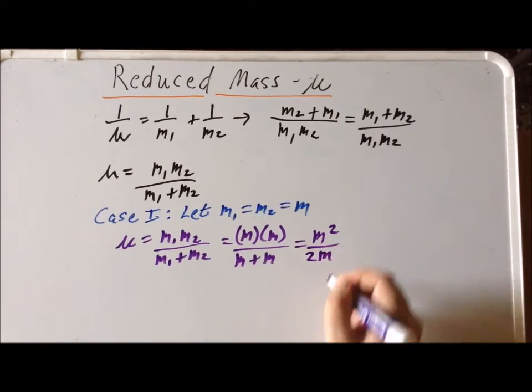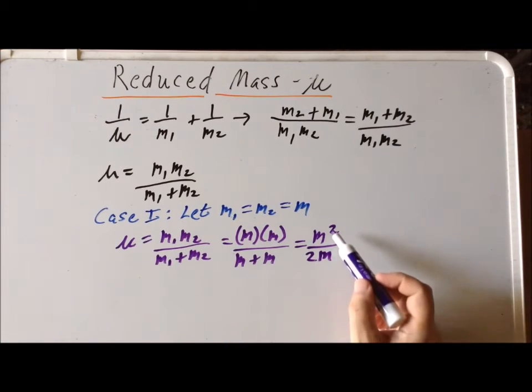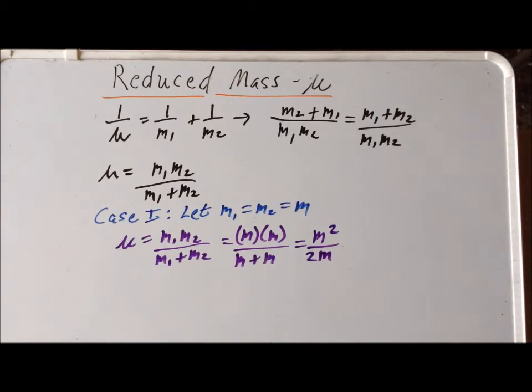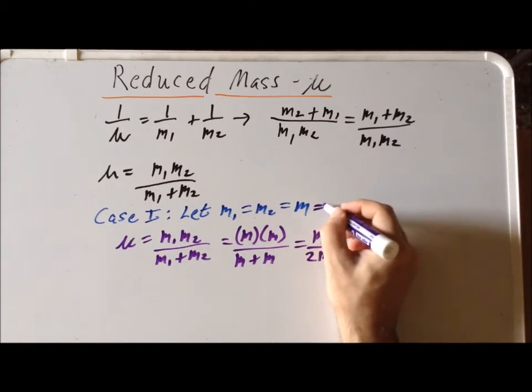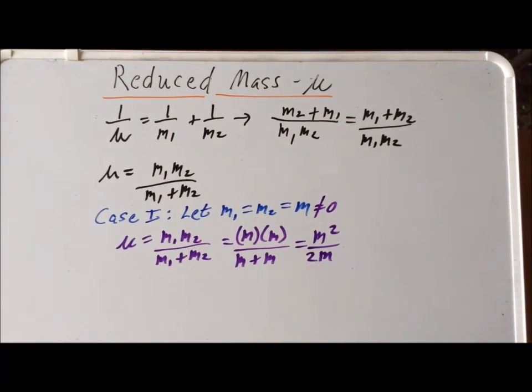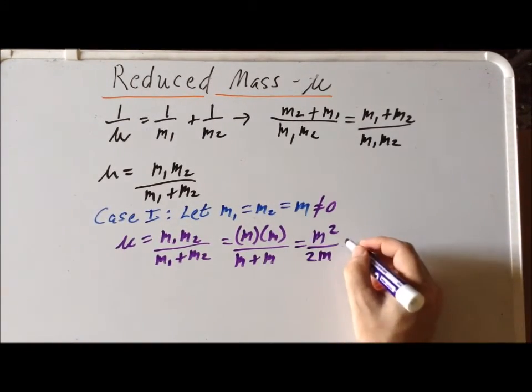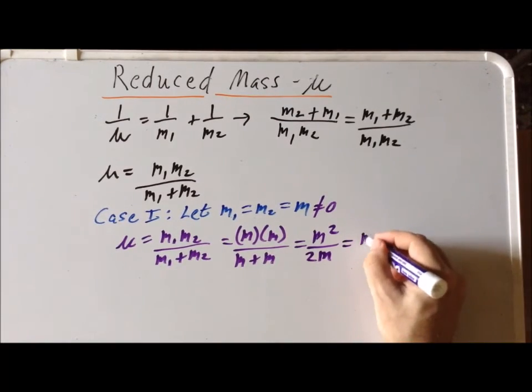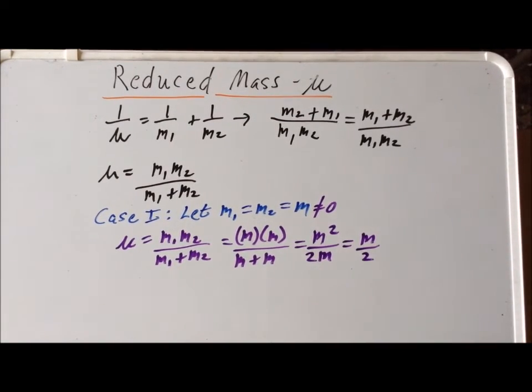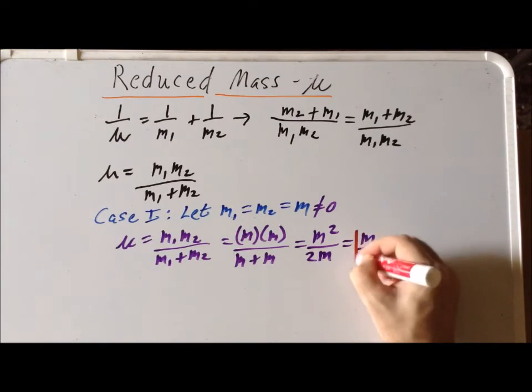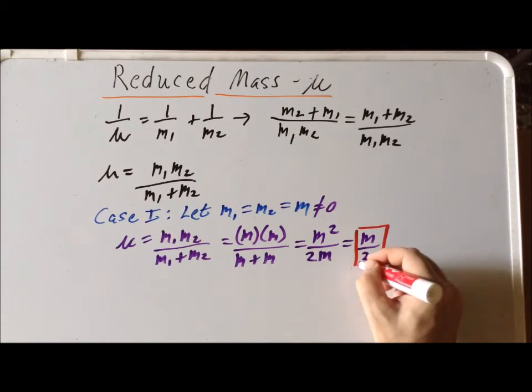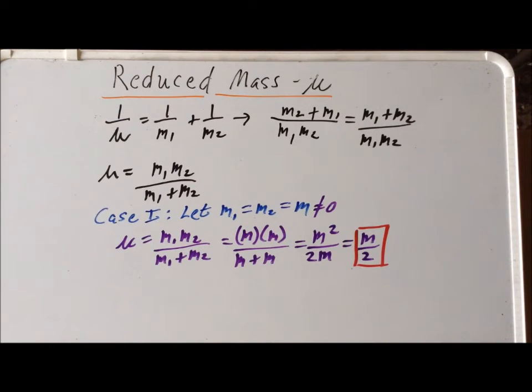So the reduced mass is equal to M squared divided by 2M. But so long as the mass is not equal to zero, we can divide through by M. And our final result is that the reduced mass for this system is simply one half of the mass of either of the two particles. So if we have two identical particles, the reduced mass is simply one half of the mass of one of those two particles.